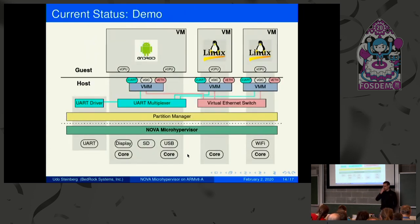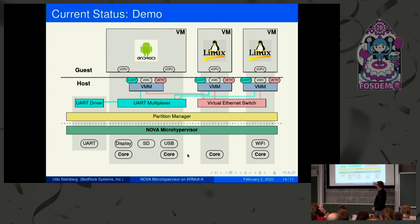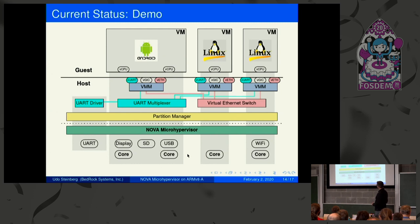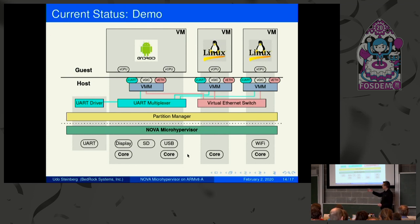I'd like to invite my colleague Shantanu up here for a demo. We have Nova Hypervisor with several devices assigned to different virtual machines using the SMMU. Each VM has virtual I/O interfaces — virtual Ethernet and virtual UART. The different VMs are connected via a virtual Ethernet switch, and we have a console into every VM using a UART multiplexer, with the UART driver as a host component with direct hardware access.